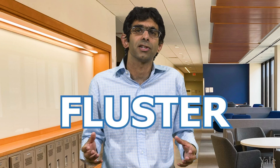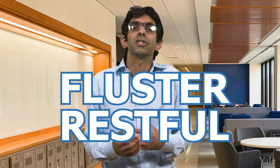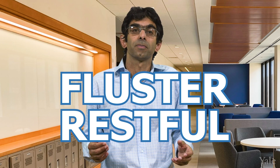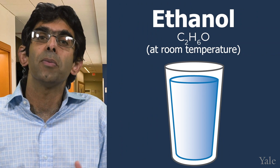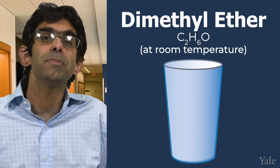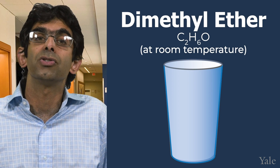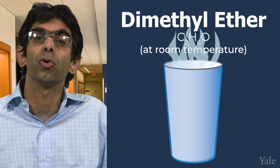Atoms are like letters, and compounds are like words. Two words like 'restful' and 'fluster' might contain the same letters, but the order of the letters results in words with completely different meanings. Let's do an example with chemistry. At room temperature, ethanol is a liquid that you can drink. However, if someone gives you a glass filled with dimethyl ether, which has the same chemical formula as ethanol, there would just be gas in your cup, which would probably float away before you can inhale it.